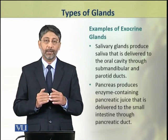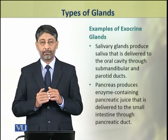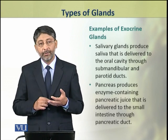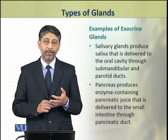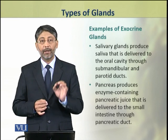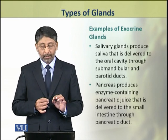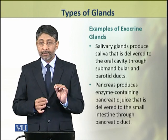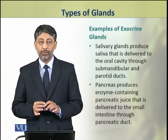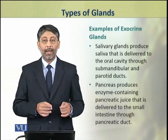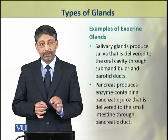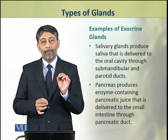We shall take a few examples of exocrine glands. First are the salivary glands which produce saliva that is delivered to the oral cavity through mandibular and parotid ducts. Another example is the exocrine pancreas, which produces pancreatic juice that contains digestive enzymes and is delivered into the lumen of the small intestine by the pancreatic duct.